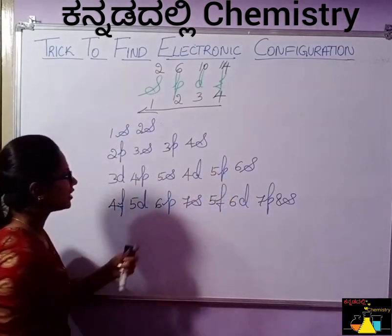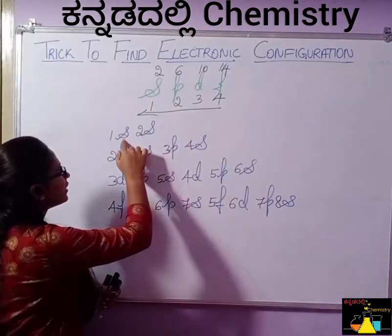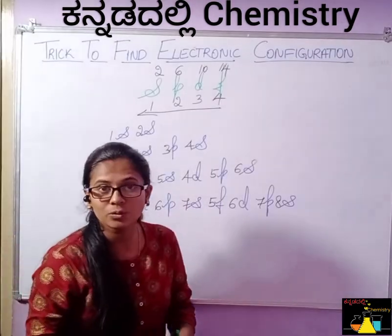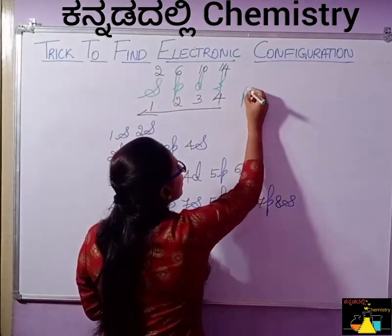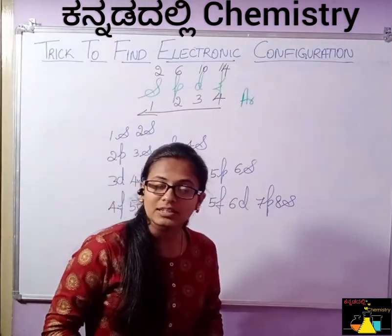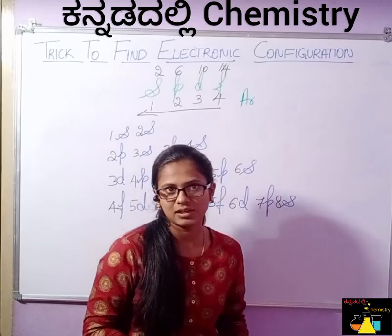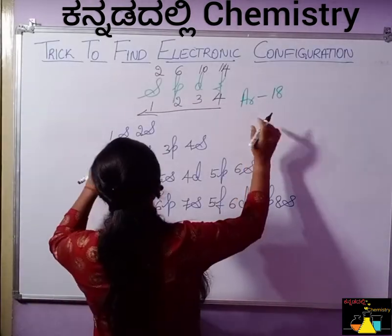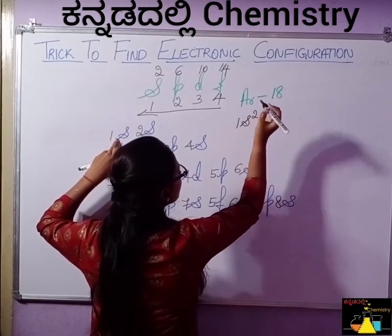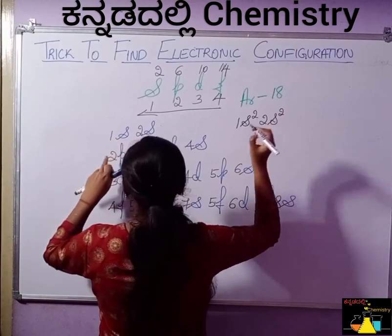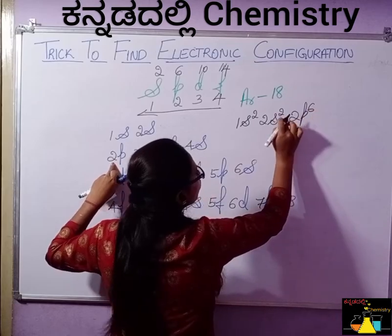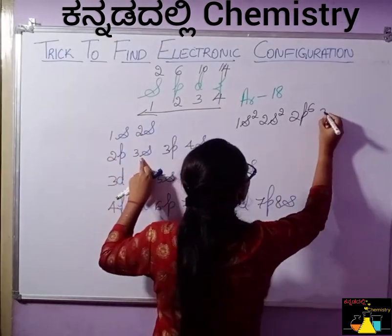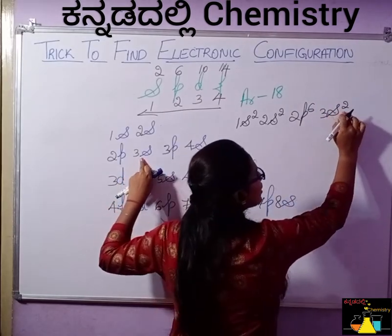It is a trick. Come over here: 1s, plus 1s, plus 1s, plus 1s, plus 3s — oral 2s plus 1s plus 1s plus 3p plus 2p. That is how it works. But here you can look for example — Argon. There you go. Write the electronic configuration of Argon.